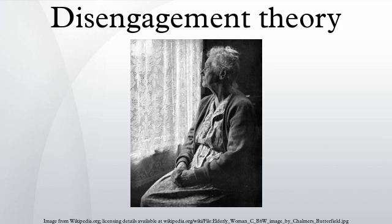Postulate 8: fewer interactions and disengagement from central roles lead to the relationships in the remaining roles changing. In turn, relational rewards become more diverse, and vertical solidarities are transformed to horizontal ones. Postulate 9: disengagement theory is independent of culture, but the form it takes is bound by culture.